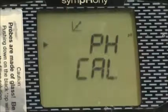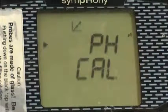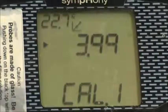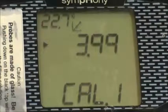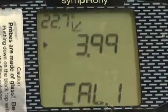To go into calibration mode, press the Cal button. pH Cal should appear on the screen. Cal 1 should then appear, and the instrument should automatically read the correct pH of the buffer solution.